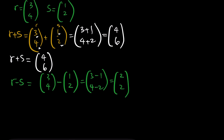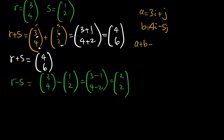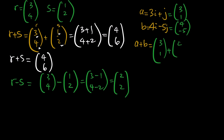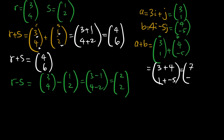Now vectors in standard form: vector a is 3i + j and vector b is 4i − 5j. Convert to component form: a = (3, 1) and b = (4, negative 5). Adding a + b: x-component 3 + 4 = 7, y-component 1 + (negative 5) = negative 4. So a + b = (7, negative 4).